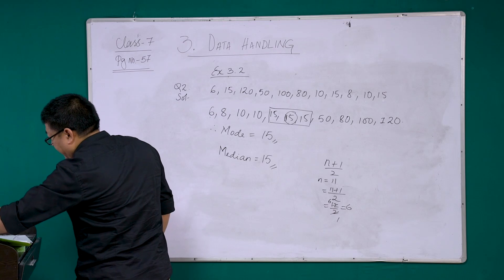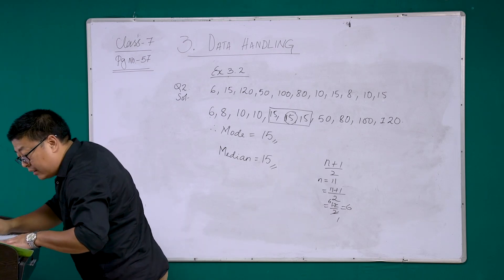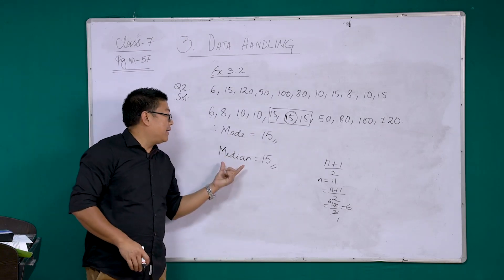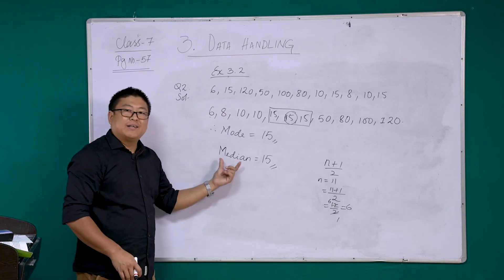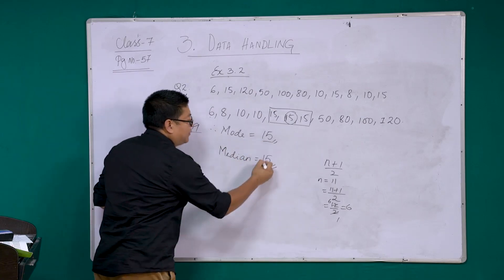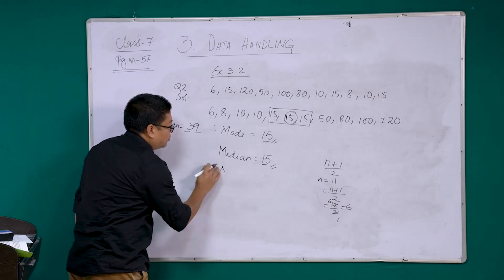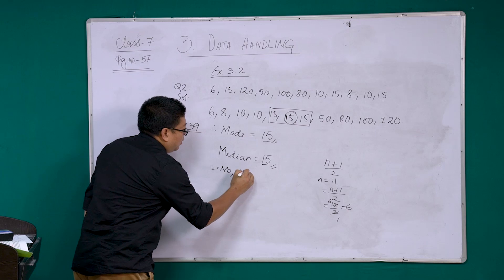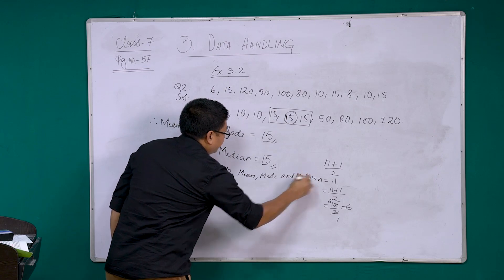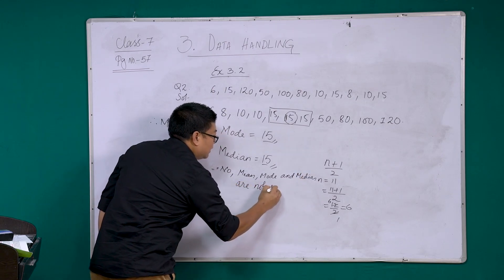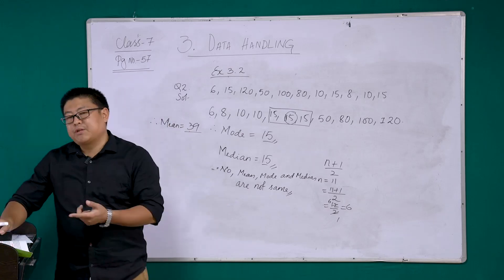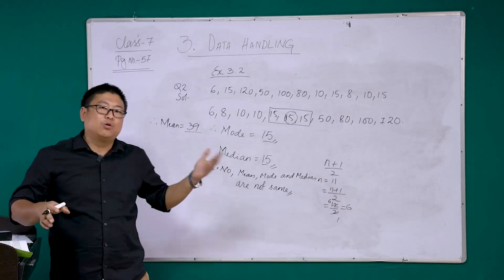Finally, they are asking: are the three the same? That means, are the mean, mode, and median the same? We can see that mode and median are both 15. But the mean was 39. So 39, 15, 15 — they are not the same. Therefore, mean, mode, and median are not the same. The rest of the questions are quite similar; please try them at home.